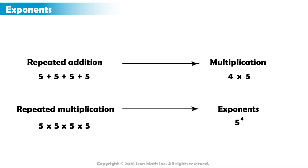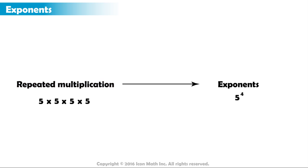Exponents are a way of writing repeated multiplication. An exponential expression is made with a base and an exponent. The big bottom number is the base, while the exponent is the number written to the top right of the base. The base is the number that is multiplied, and the exponent is the number of times you multiply the base by itself.